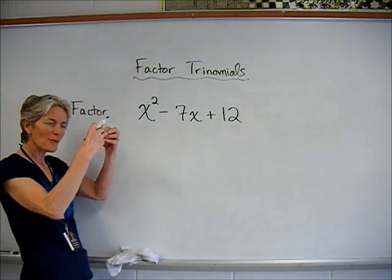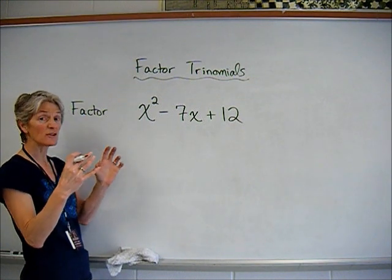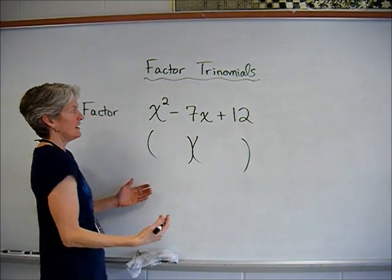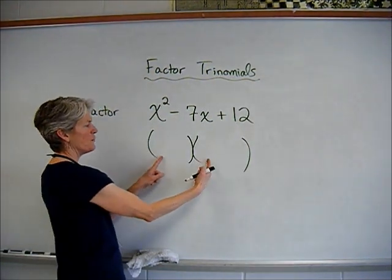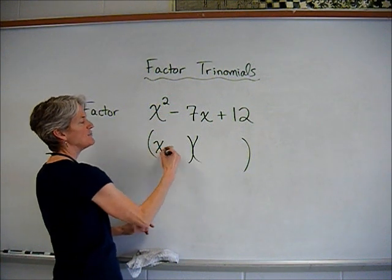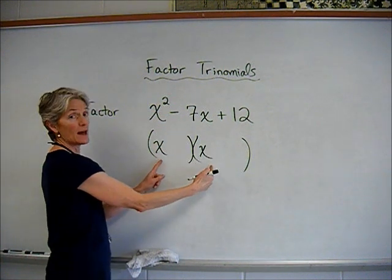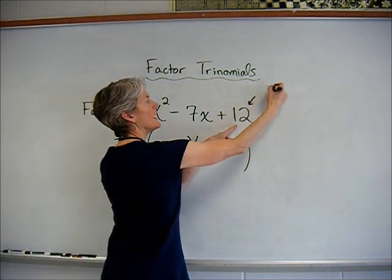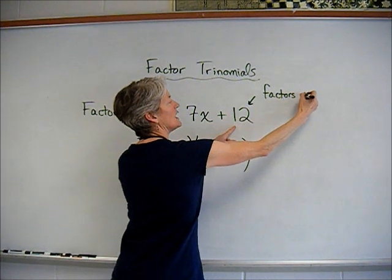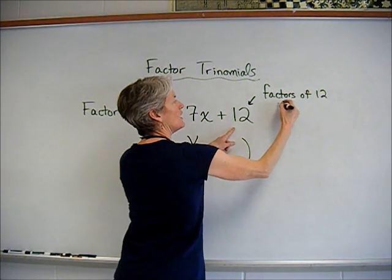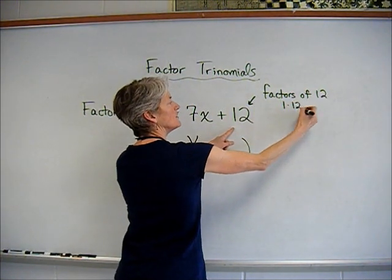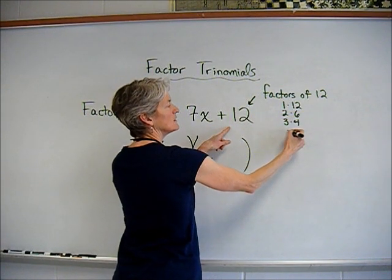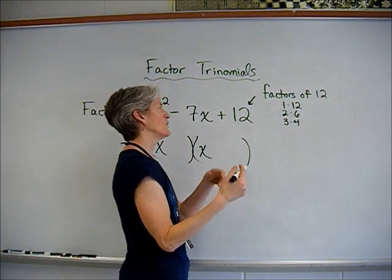Here we go. Factor this. Again, factoring, you're breaking it apart into its factors, into the things that multiply to equal that expression. Here I go. So this times this has to equal x squared. I'm feeling pretty good about my x times x. The last two terms have to multiply to equal that 12. Ooh, gosh. There are a lot of factors in 12. Oh, yeah. A lot of them. We've got 1 and 12, 2 and 6, 3 and 4.